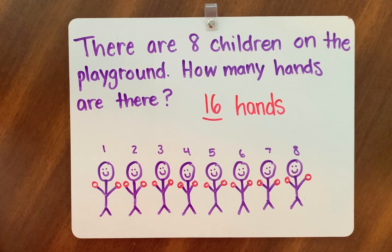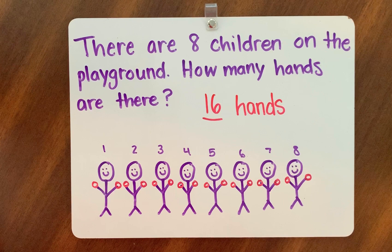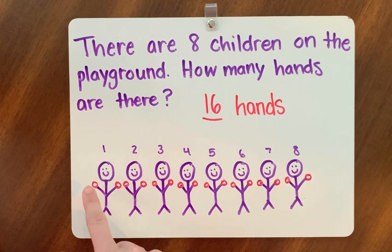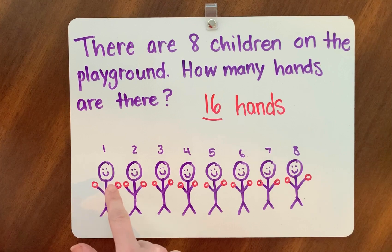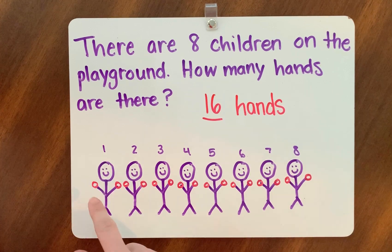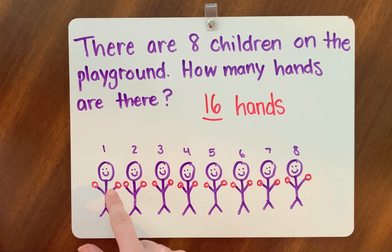Let's practice skip counting. Each time I point to a person, I'm going to count two for two hands. So instead of one, two, three, four, I'll just do two, four.